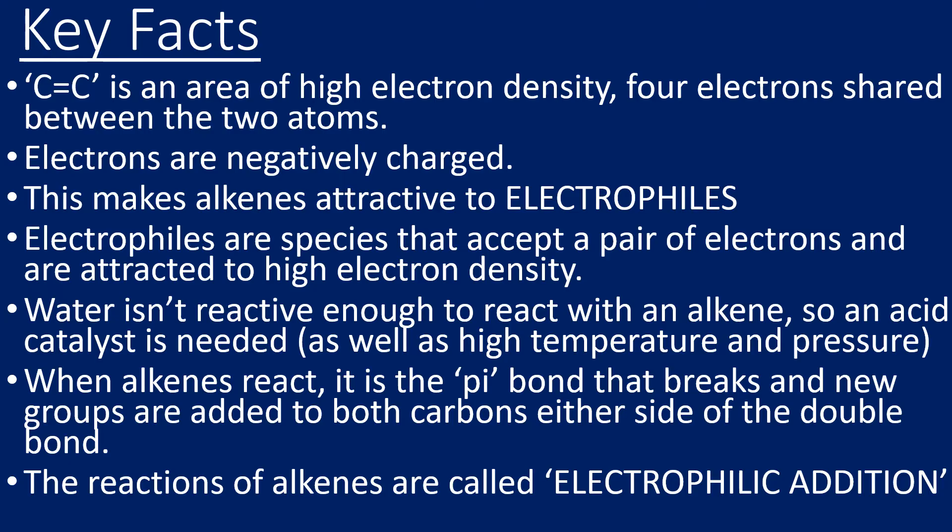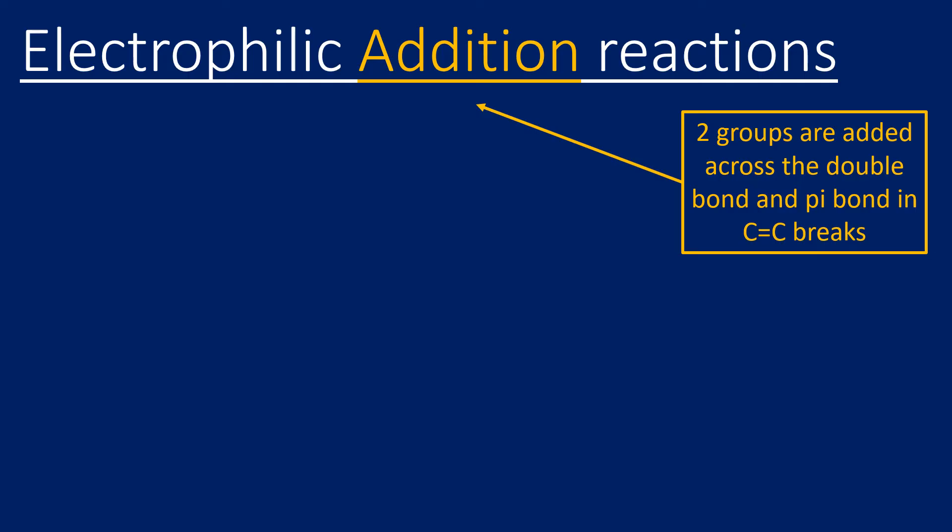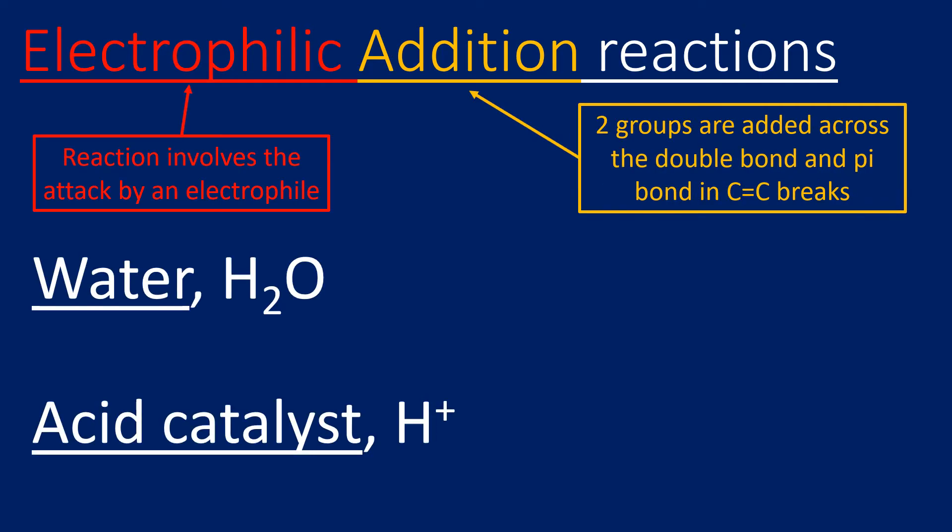It's called an addition reaction because we're adding two groups to this alkene. It's electrophilic because it involves the attack by an electrophile. As I said earlier, water as an electrophile isn't strong enough to react with an alkene. Despite the fact that it does have these delta plus hydrogens, it's not strong enough to actually react with the alkene. So we need an acid catalyst, and this H+ is definitely strong enough to react with the alkene. It's the H+ that initiates this reaction.